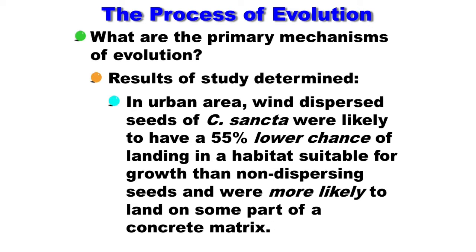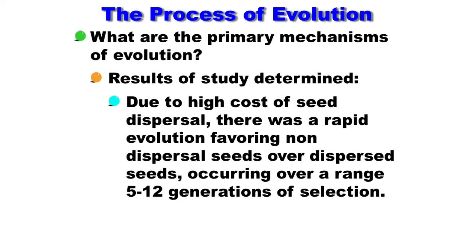After collecting experimental data, scientists found that in urban areas, dispersed seeds of Crepis sancta were likely to have a 55% lower chance of landing in a habitat suitable for growth than non-dispersing seeds, and were more likely to land on some part of the concrete matrix. Due to the higher cost of seed dispersal, there was a rapid evolution favoring non-dispersal seeds, occurring over a range of 5 to 12 generations of selection — meaning evolution may happen very rapidly, taking just 5 to 12 years, because this is an annual plant. This is an example of microevolution.